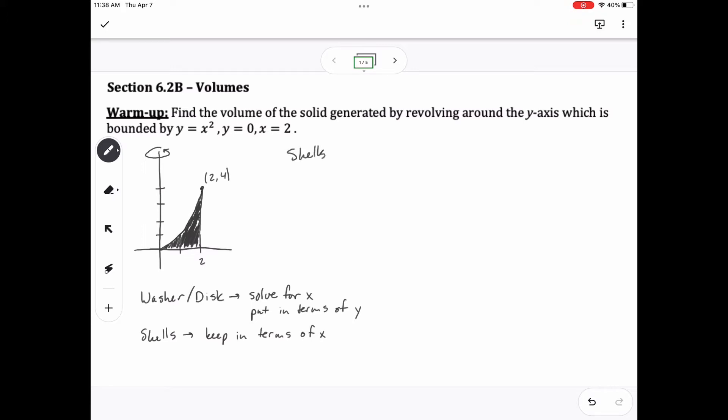For this problem, it would probably be easier to keep it as x squared, so I'm going to use shells. That means I'm using circumference to help me find this area. We'll go from 0 to 2 for our interval, so 2 pi times our radius, which is x, multiplied by our height, which is x squared minus 0. In this case, it's just x squared.